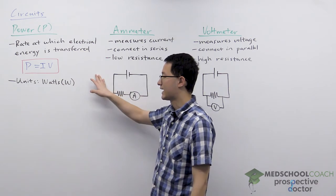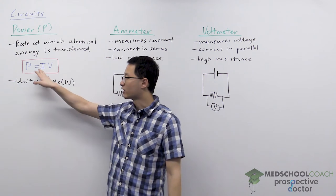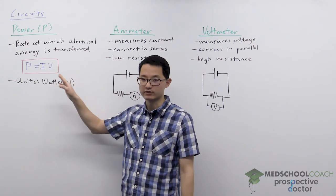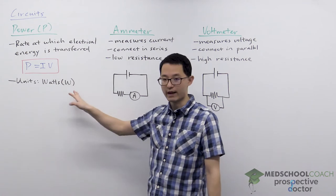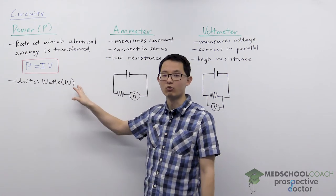The power can be calculated as the product of current and voltage, P equals IV, and since it's power the unit is the watt.